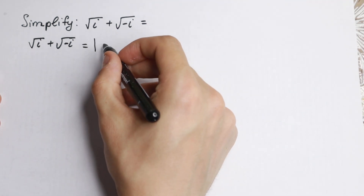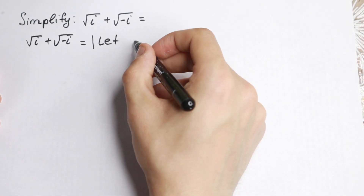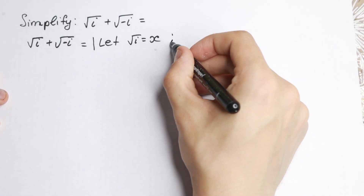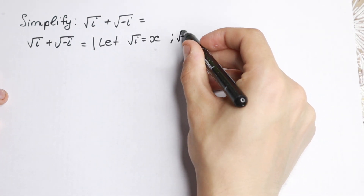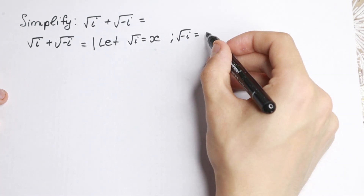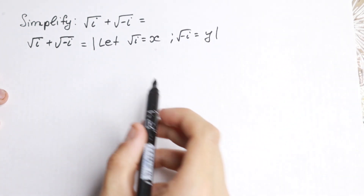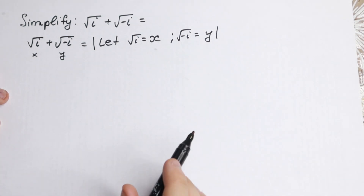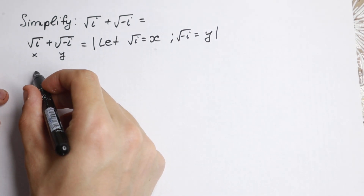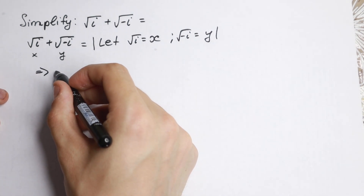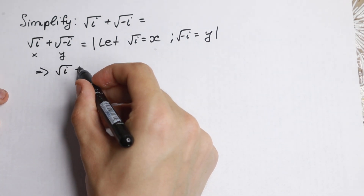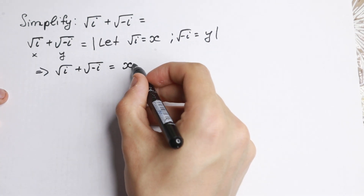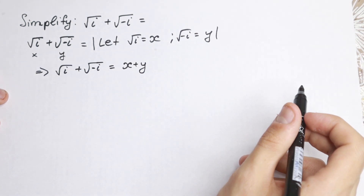So let's use a substitution. Let square root of i equal x, and moreover square root of minus i equal y. So this is our x and this is our y. What will we have as a result? We will have that square root of i plus square root of minus i equals x plus y, using this substitution.